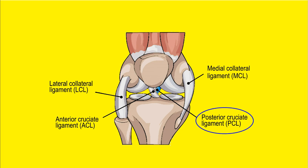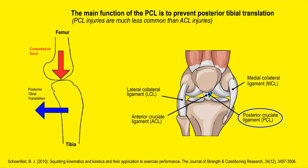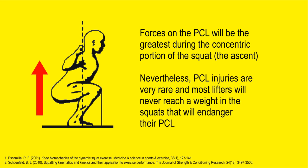Next up is the PCL, similar to the ACL — it also prevents translation but in the posterior plane. Forces on the PCL will be greatest during the concentric portion of the squat, when you push off from the bottom. PCL injuries are way less common than other ligament injuries. The vast majority of lifters will most probably injure their ACL; very few will reach a weight that poses a real danger to the PCL, which is more often injured through traumatic accidents.